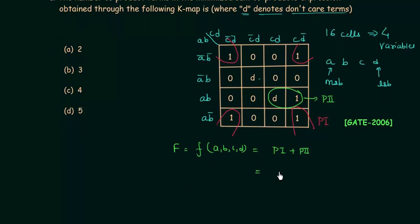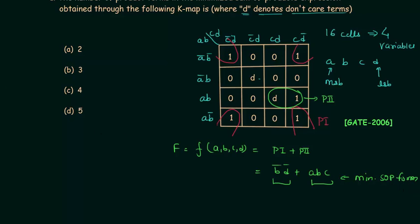P1 is equal to B complement D complement. P2 is equal to A B C. So there are two product terms in the minimized SOP form. This is the minimized SOP form obtained from the K-map, and there are two product terms in this expression. So option A is the correct option. This was a straightforward problem that appeared in the Gate 2006 exam.